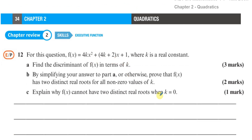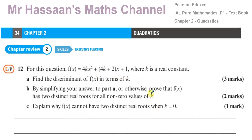For this question, f of x equals 4kx squared plus (4k plus 2)x plus 1, where k is a real constant. Part a says: find the discriminant of f of x in terms of k.